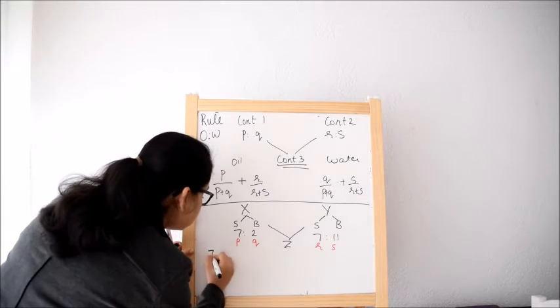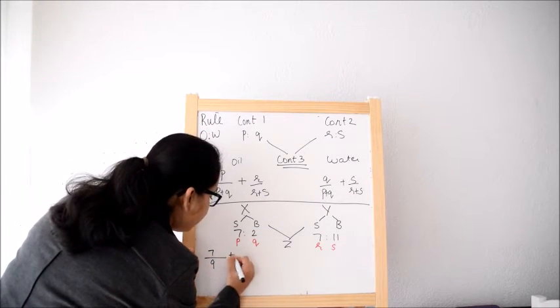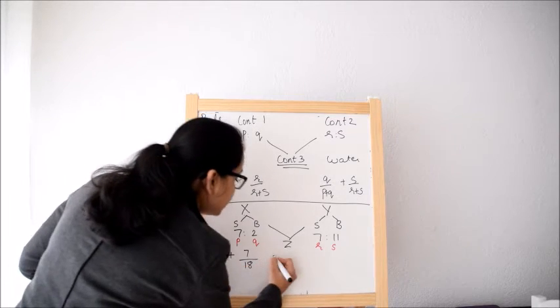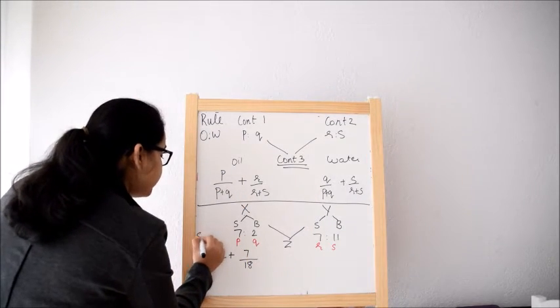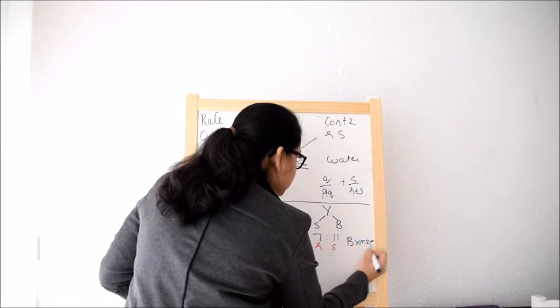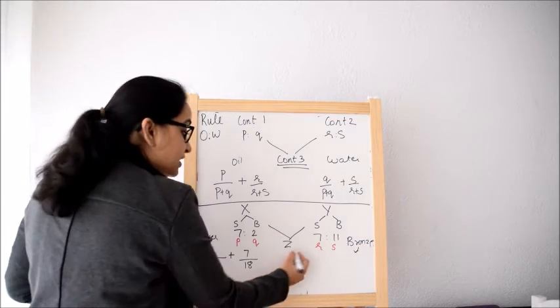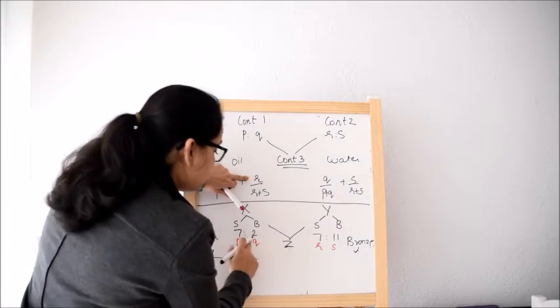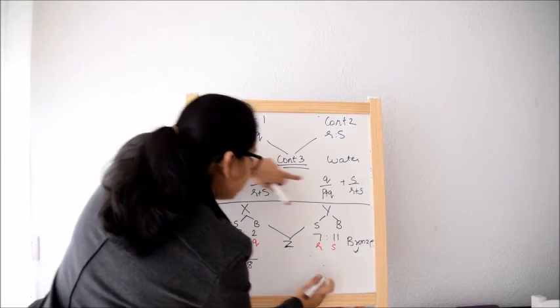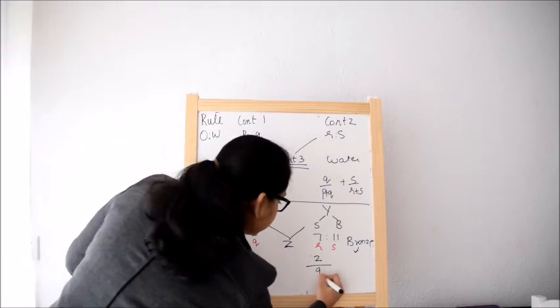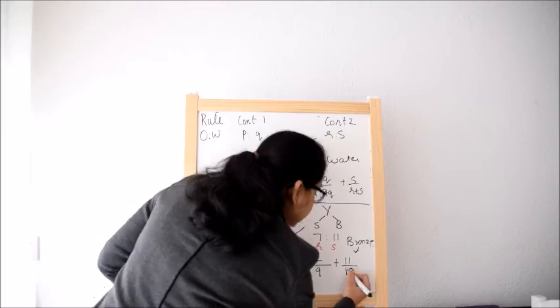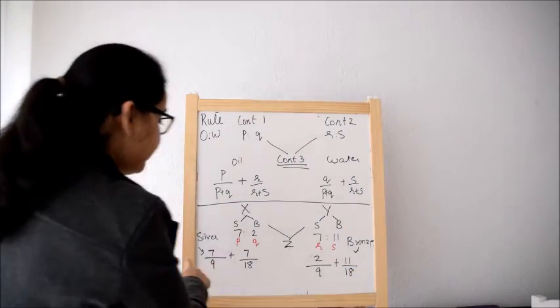Now P is 7, 7 upon P plus Q is 9 plus R that is 7 upon R plus S is 18. And this is what, this is silver. And this is bronze. What we are finding here is silver and this is bronze in Z. Now this bronze is Q that is 2 upon 9 plus S that is 11 upon 18.